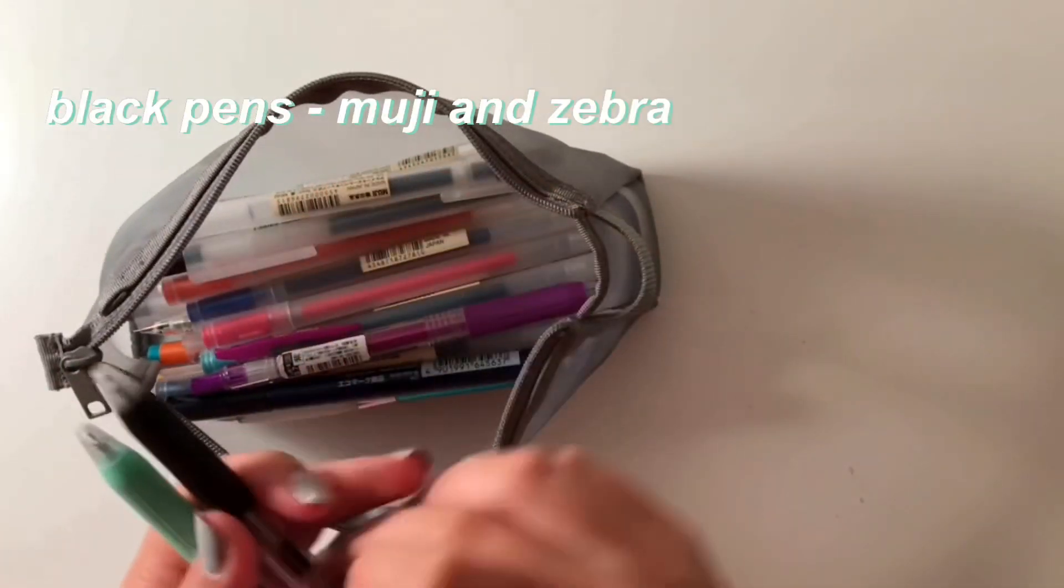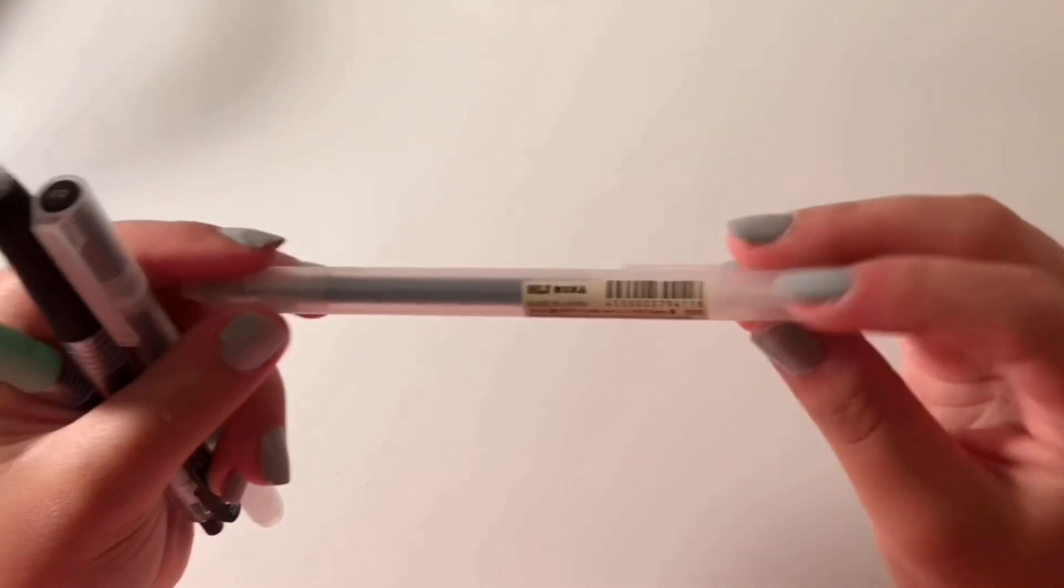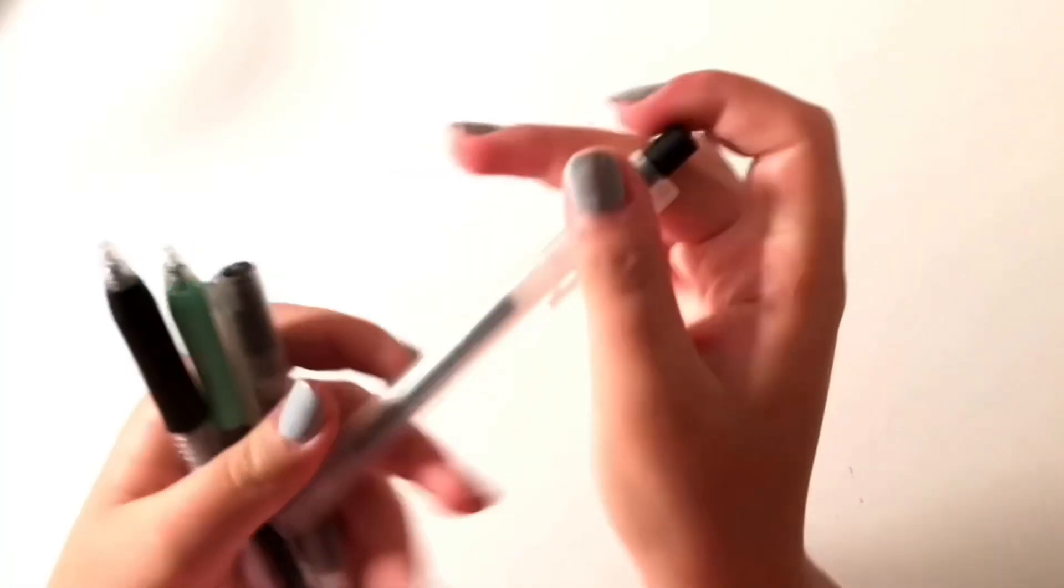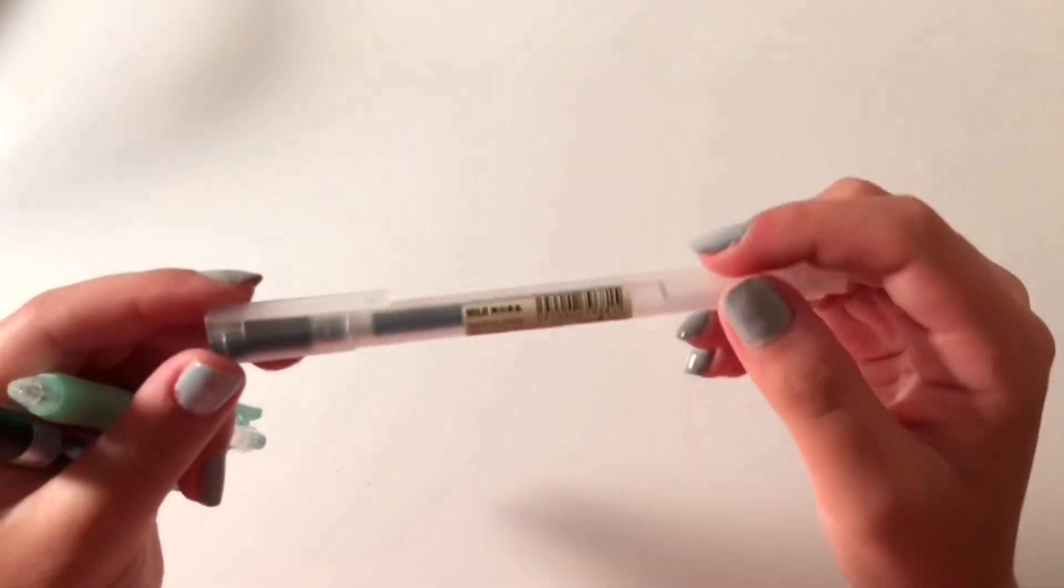Next these are my black pens. I think I have around four of them and this first one is the Muji ballpoint one. This is one of my favorites. It's really consistent and just a really good pen and then the next one I have is the 0.5 Muji gel pen.